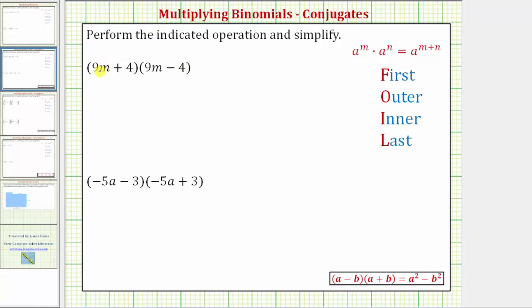So we first distribute 9m into the second binomial. So we have one, two products. Then we distribute the four into the second binomial giving us two more products. When multiplying two binomials we always have four products.